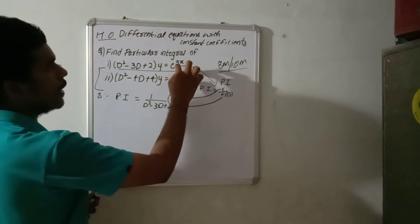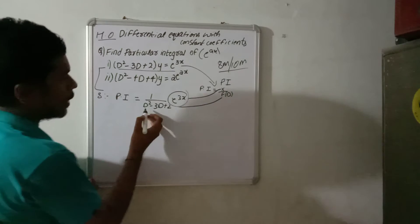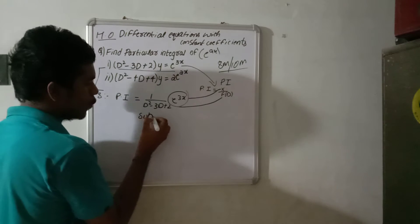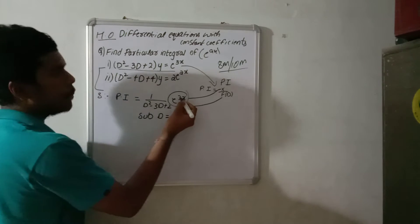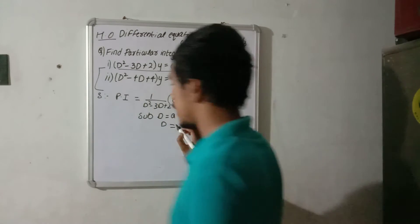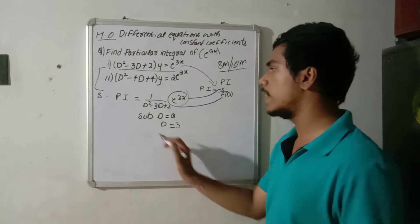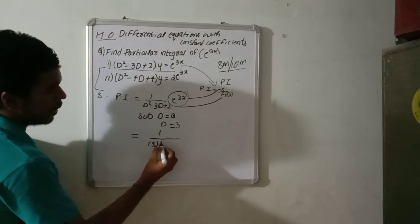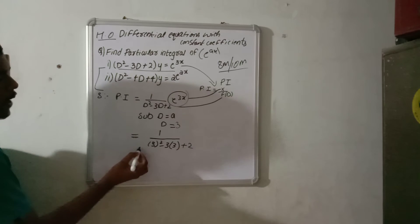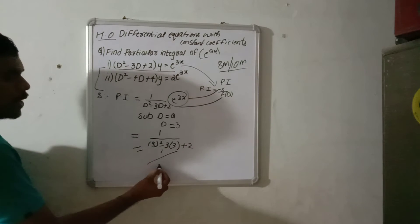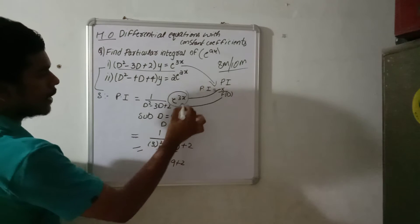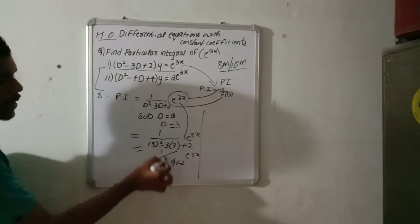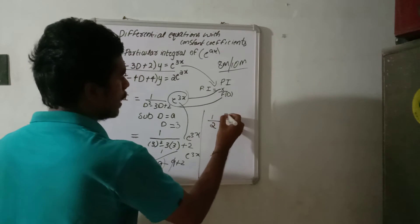First of all, e^(3x) follows the e^(ax) formula. So we substitute D equals A, that is D equals 3. So: 1 by (3² - 3×3 + 2) into e^(3x) = 1 by (9 - 9 + 2) into e^(3x). The 9s cancel, giving 1 by 2 into e^(3x). So the final answer is (1/2)e^(3x).